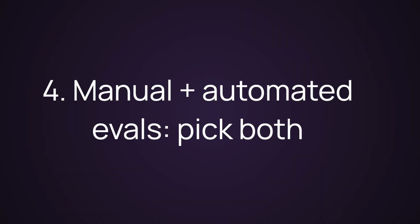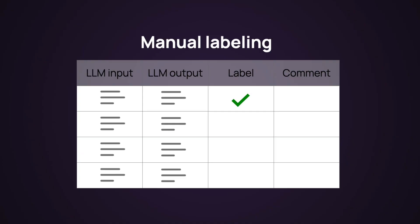The first obvious solution to this complexity is manual evaluations, and honestly, that's where you should start. You should read the outputs you get — this will help you build intuition, spot patterns, and understand what 'good' means in your use case. If you can ask subject matter experts to label some data, this is priceless, especially early on. However, this doesn't scale, so you need automation.